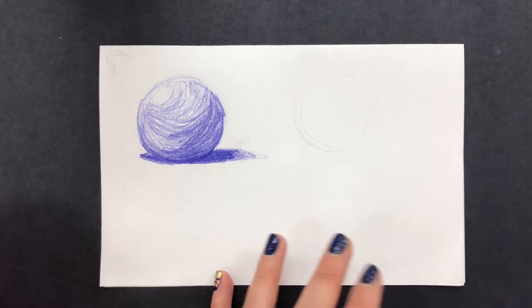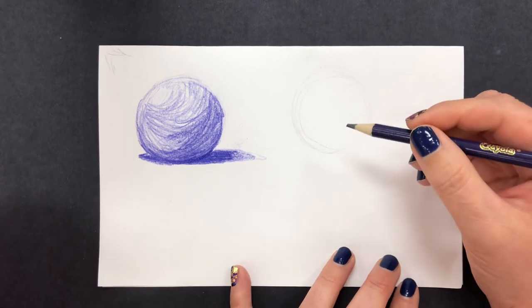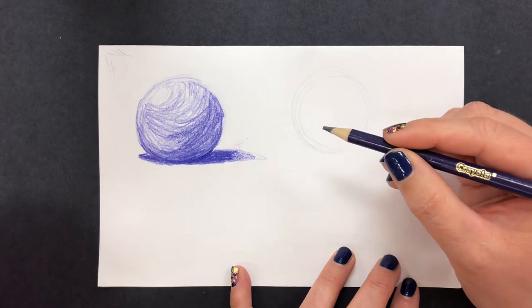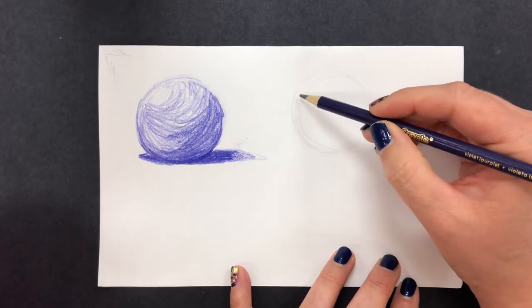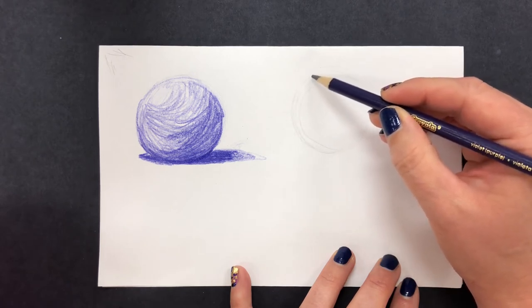I know that's barely visible to you but that's a good thing because it means I will be able to cover up my lines. Now I'm going to go back with my colored pencil and very lightly outline that circle shape.